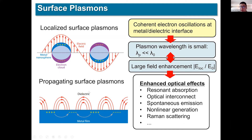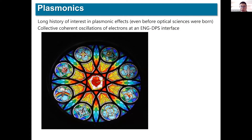For the host medium, we will have double-positive material such as glass. Therefore, the negative permittivity of the metal can cancel the positive epsilon of the host medium and achieve a strong resonant scattering. So even if the particle is very small, it can be quite bright and colorful. This effect can be dated back to the Middle Ages — there is a long history of interest in this type of plasmonic effect, even before optical science was born.